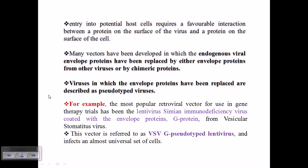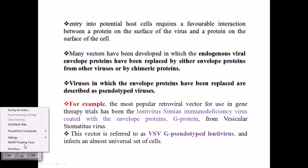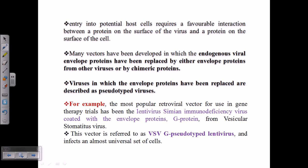Pseudotyping can only be achieved for enveloped viruses. We can utilize this kind of enveloped virus for gene therapy purposes. An example is lentivirus, which is part of the retroviral family, so we can utilize retroviral members for our gene therapy purposes.